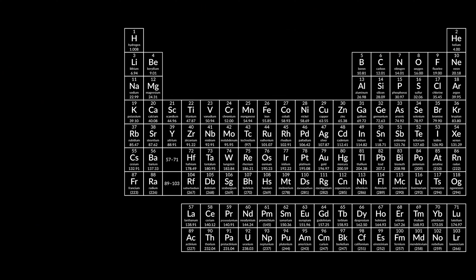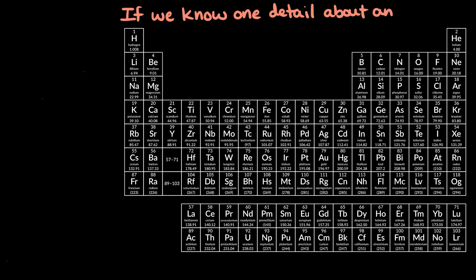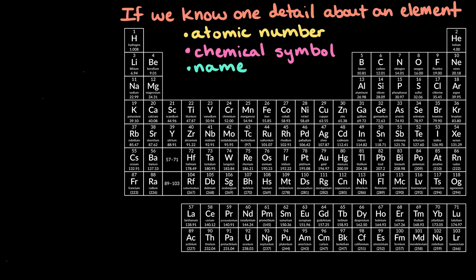What's neat about having all of this information in one place is that if we know one detail about an element – either its atomic number, chemical symbol, or name – we can often use the periodic table to find out the other details. Let's take a look at a few examples.